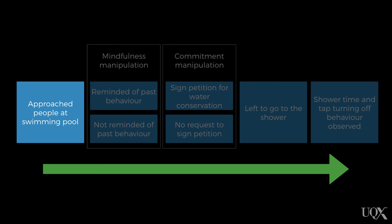In Dickerson and colleagues' 1992 study, they were interested in how to get people to behave in ways that saved water. The study was done in California, which at the time was experiencing a severe drought. The researchers went to a public swimming pool, and as people got out of the pool, a researcher approached some of them to ask about their past water conservation behaviour by having the swimmer complete a checklist. This checklist was biased in such a way that it was difficult to answer yes to many of the questions, even though the behaviours listed were all sensible water-saving behaviours.